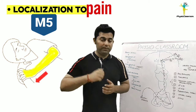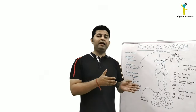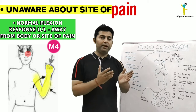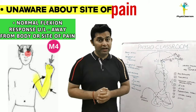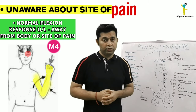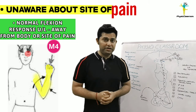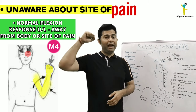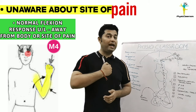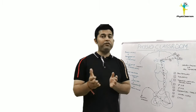Whenever the upper limb flexion response is such that the patient is able to localize the site of pain and is actually able to remove the painful stimuli, it is known as a localization to pain response. In conditions when the patient is unaware about the site of pain — that is, the brain is only aware that pain exists but pain localization is absent — the patient may demonstrate a normal flexion response with abduction and external rotation.